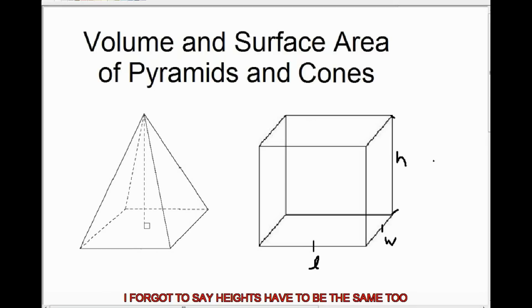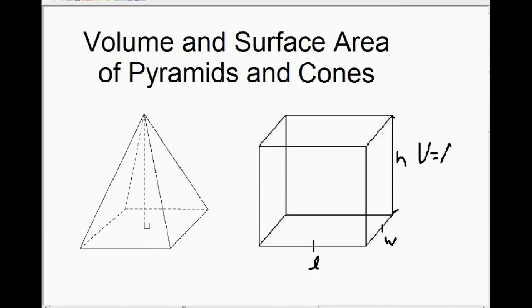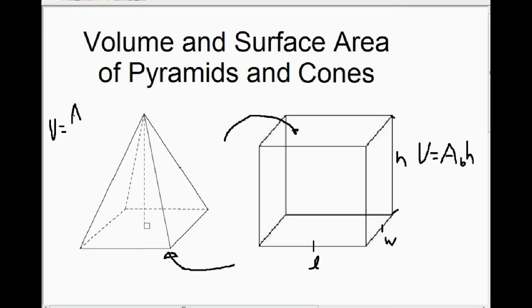So that being the case, since the volume of our cube is area of the base times the height — so area of the square times the height — that's how we calculate the volume of the cube. It's a prism, so that's how we calculate the volume of any prism, and a cylinder as well: area of the base times the height. Since there are three volumes of the pyramid needed to fill up this cube...